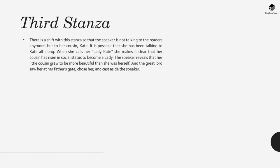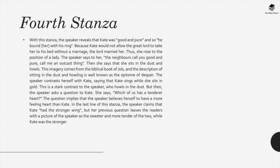In the third stanza, the speaker addresses her cousin Kate directly, calling her 'Lady Kate' — Kate has risen in social status by choosing the right man and marrying him. The speaker reveals that her little cousin grew to be more beautiful than herself, and the great lord saw Kate at her father's gate, chose her, and cast aside the speaker. In the fourth stanza, Kate was 'good and pure,' so he bound her with his ring — having seen the speaker as soiled by their sexual encounter, he sought a purer woman.